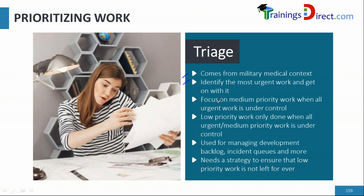Once the urgent work is under control, there should be focus on medium priority work as well — we can't just ignore it. Once both urgent and medium priority work are taken care of, only then is the low priority work addressed. This is quite logical and is typically done in agile.